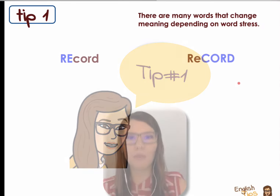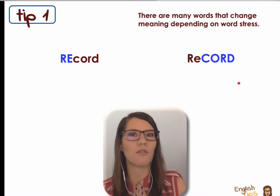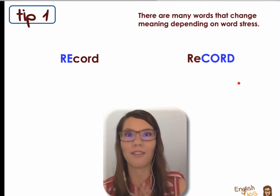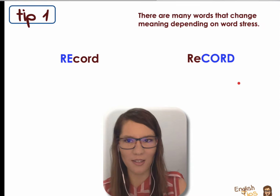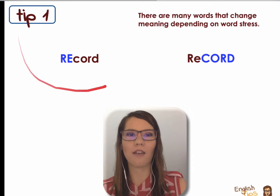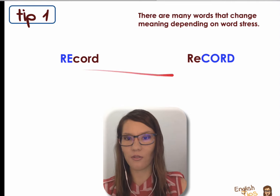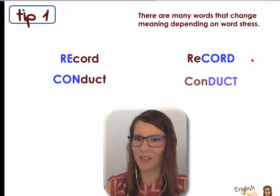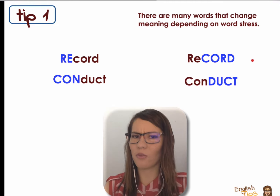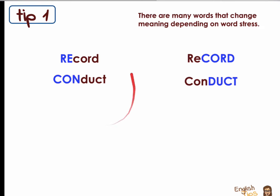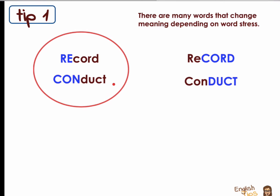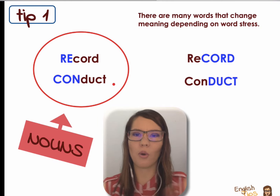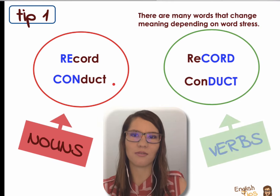So tip number one is focusing on a list of words that change meaning or grammatical category depending on where we place the stress. For example, we have record versus record, or conduct versus conduct. What kind of words are the first two? And then record and conduct are verbs.